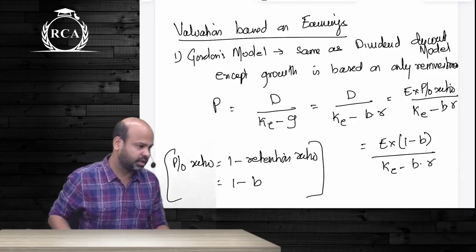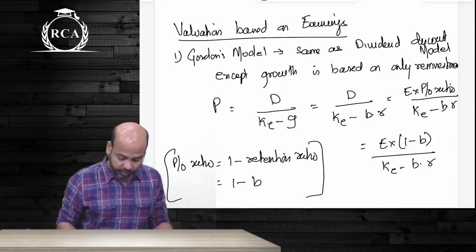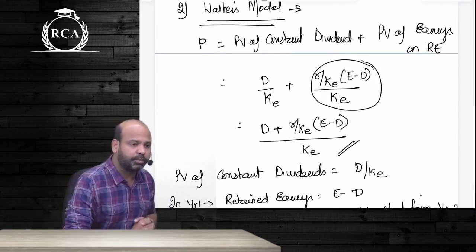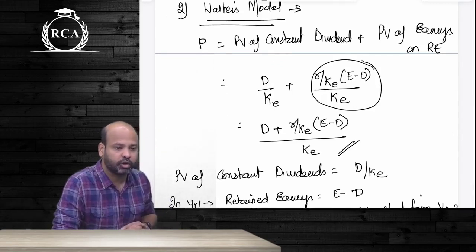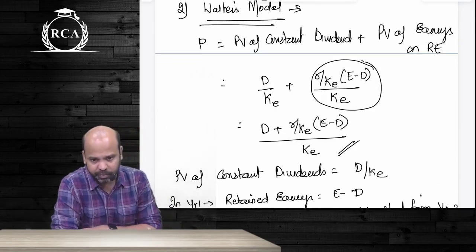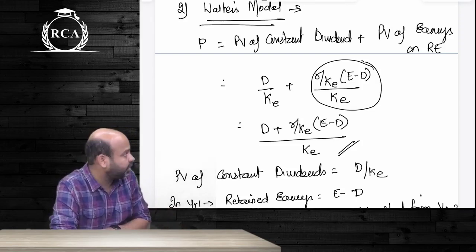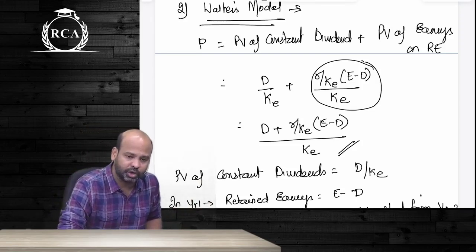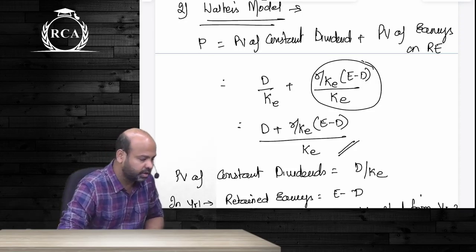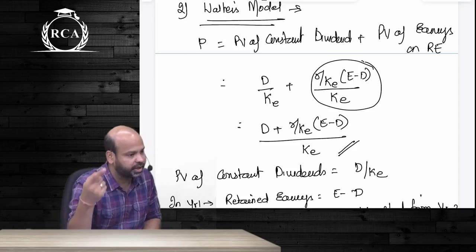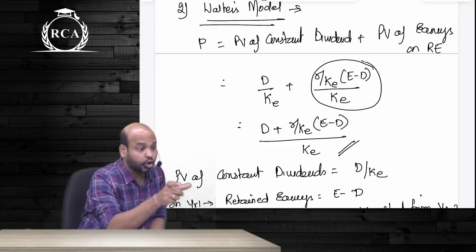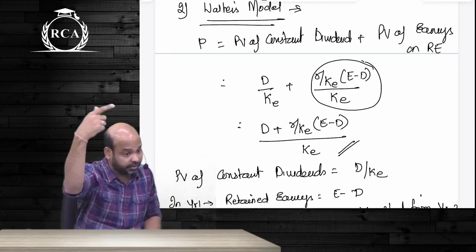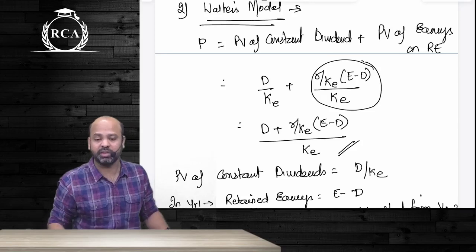Walter's model considers two components in arriving at the value of an equity share. The first is the present value of constant dividends the firm will pay year after year. The second is the present value of earnings generated on retained earnings. The formula is: D/KE + (R/KE) × (E − D)/KE. A drawback of Walter's model is that it does not consider the compounding impact of earnings on retained earnings — earnings generated in year two themselves generate additional earnings in year three, which Walter's model ignores.